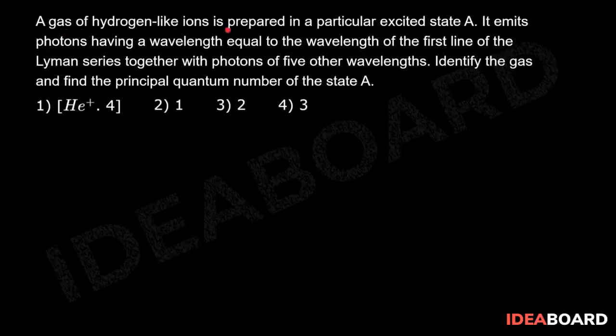A gas of hydrogen-like ions is prepared in a particular excited state A. It emits photons having a wavelength equal to the wavelength of the first line of the Lyman series together with photons of five other wavelengths. Identify the gas and find the principal quantum number of the state A.